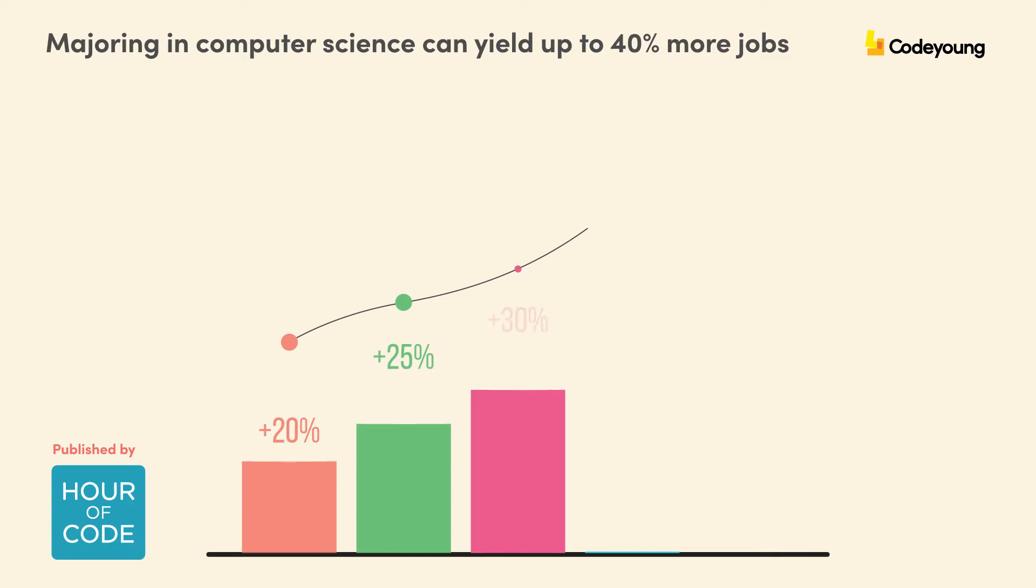A survey conducted by Hour of Code revealed that majoring in computer science can yield up to 40% more job opportunities. Yes, 40%. Wait, there's more.